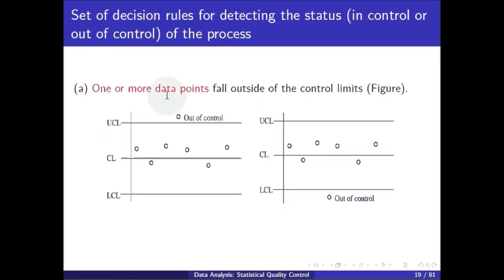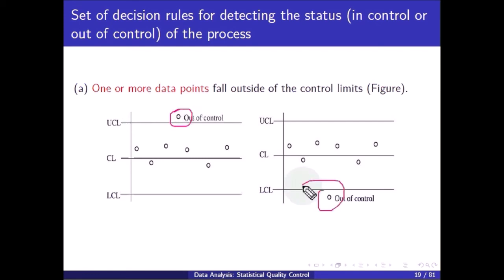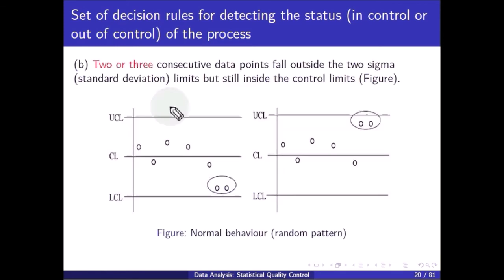For example, if one or more data points fall outside the control limit, that is an out-of-control process. Next, if two or three consecutive data points fall outside the two-sigma limit — where the control limit is three sigma and two sigma is the inner boundary — the process is also considered out of control even though the points are still inside the three-sigma control limit.